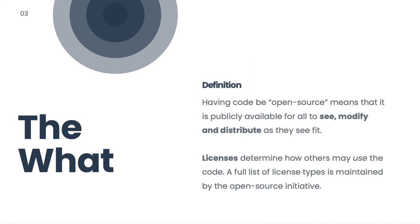Open source code is code that is publicly available for all to see, modify, and distribute as they see fit. However, this doesn't mean that there is no control at all over how software gets used. Licenses, which are assigned alongside the code, determine how others may use the code. If you are using the code of others, you'll want to read the license yourself.